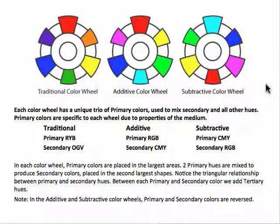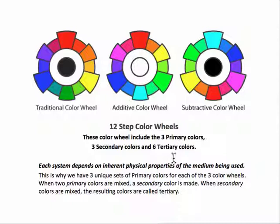We just don't have cyan and magenta being mixed using paint — we can have a magenta color but it's mixed differently; we'll get to that another time. The subtractive color wheel is based on printing processes. We have cyan, magenta, and yellow, like in home or commercial printers, and those colors are required to mix the secondary and all the other colors in that color wheel. So we have the traditional, additive, and subtractive wheels.